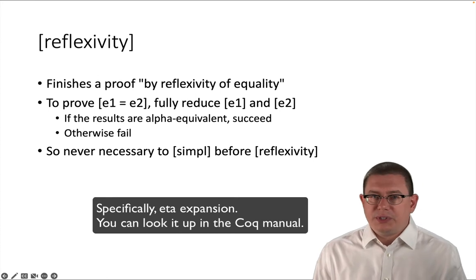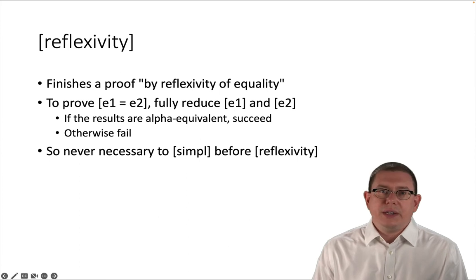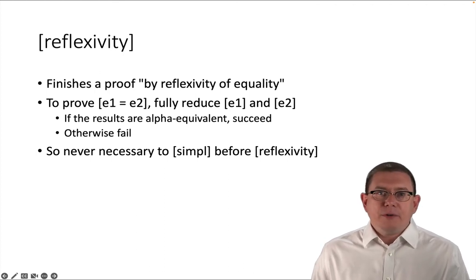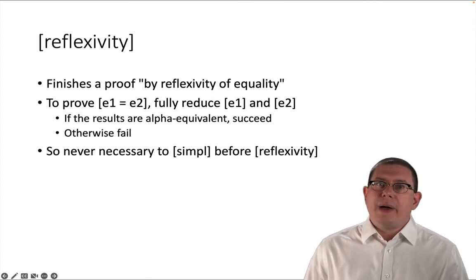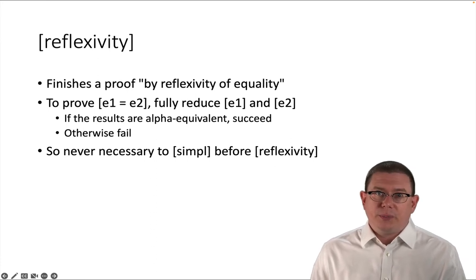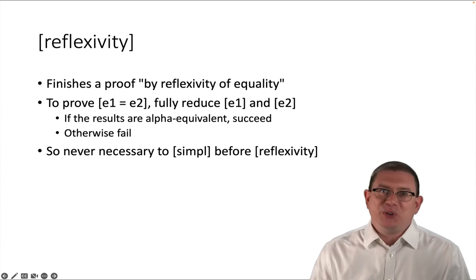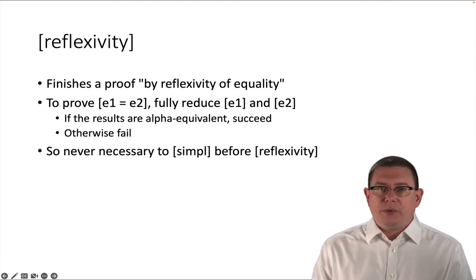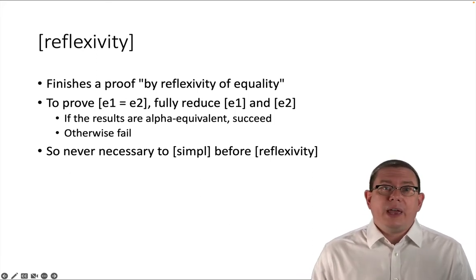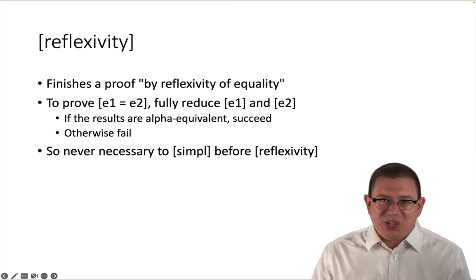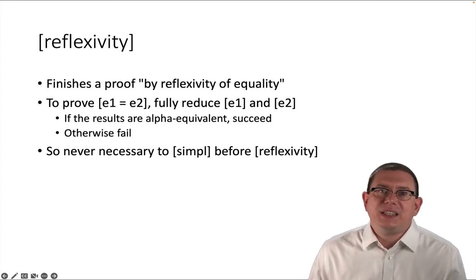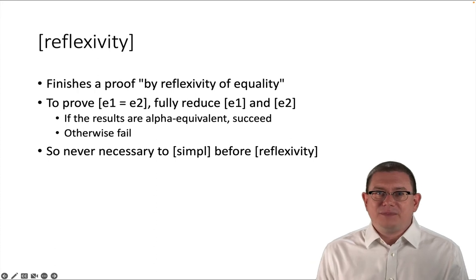This is why it's never necessary to do a simple before a reflexivity. Why? Because simple is trying to do some reductions. It's trying to be smart about which reductions it chooses. It's trying to only do those. That's going to leave an expression that's human readable. But reflexivity is just going to bring like the big hammer to it. It's going to be like, no, I'm doing all the reductions all at once here. And then I'm just going to compare for alpha equivalence. So that is why you never actually need to do a simple before reflexivity as far as satisfying Coq with the proof. On the other hand, it may help you as a human to do a simple first because then you'll get to a place where an expression is more readable to you. We humans are simple, I guess, that way.